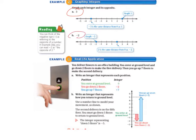Letter B, we're looking at negative 2, so its opposite is positive 2, or 2, because it's the same distance from 0 as negative 2. Let's look at our little tip box over here. It says, reading. You can think of the negative sign as referring to the opposite of a number. In example 2B, you can read negative 2 as the opposite of 2.